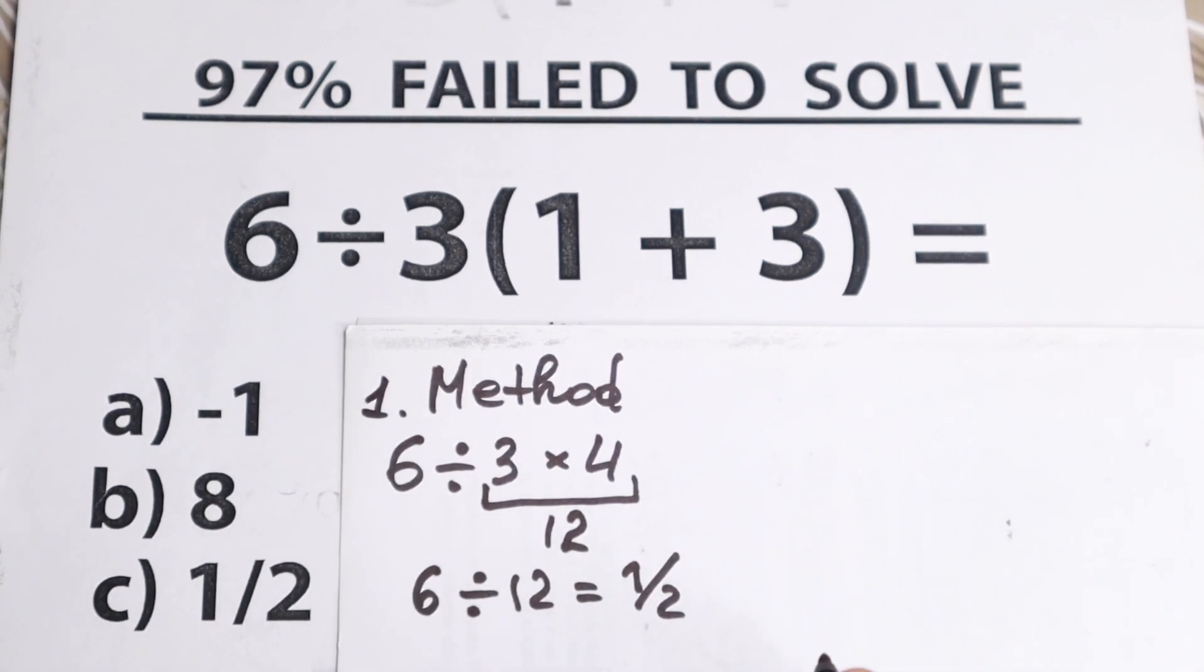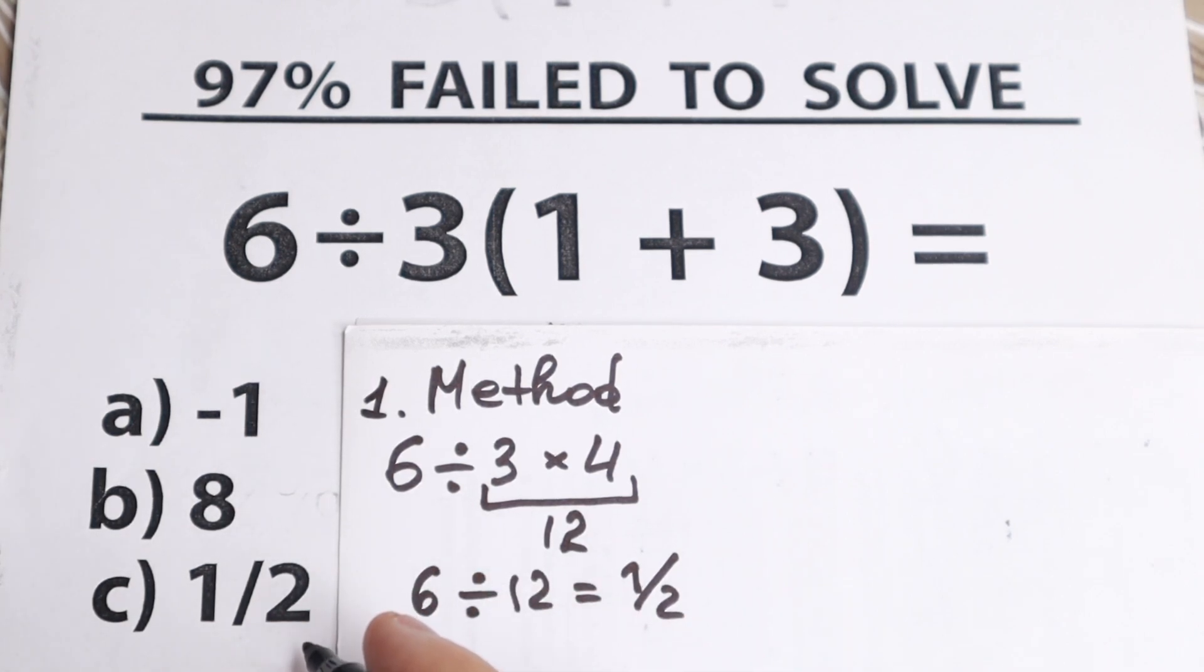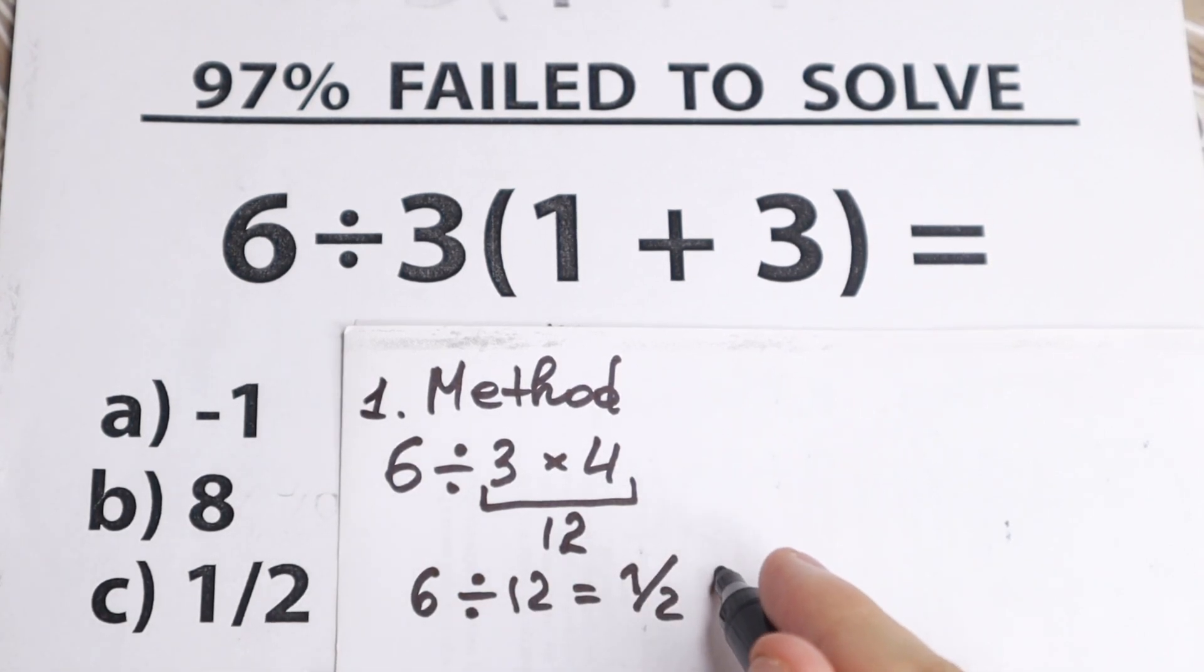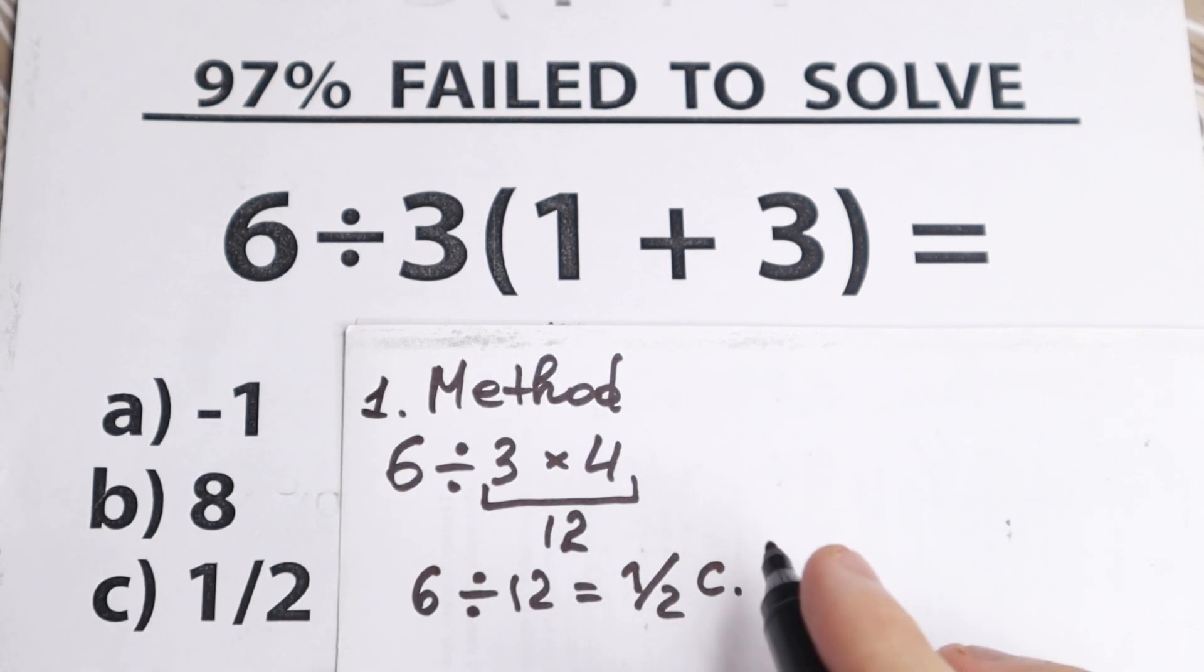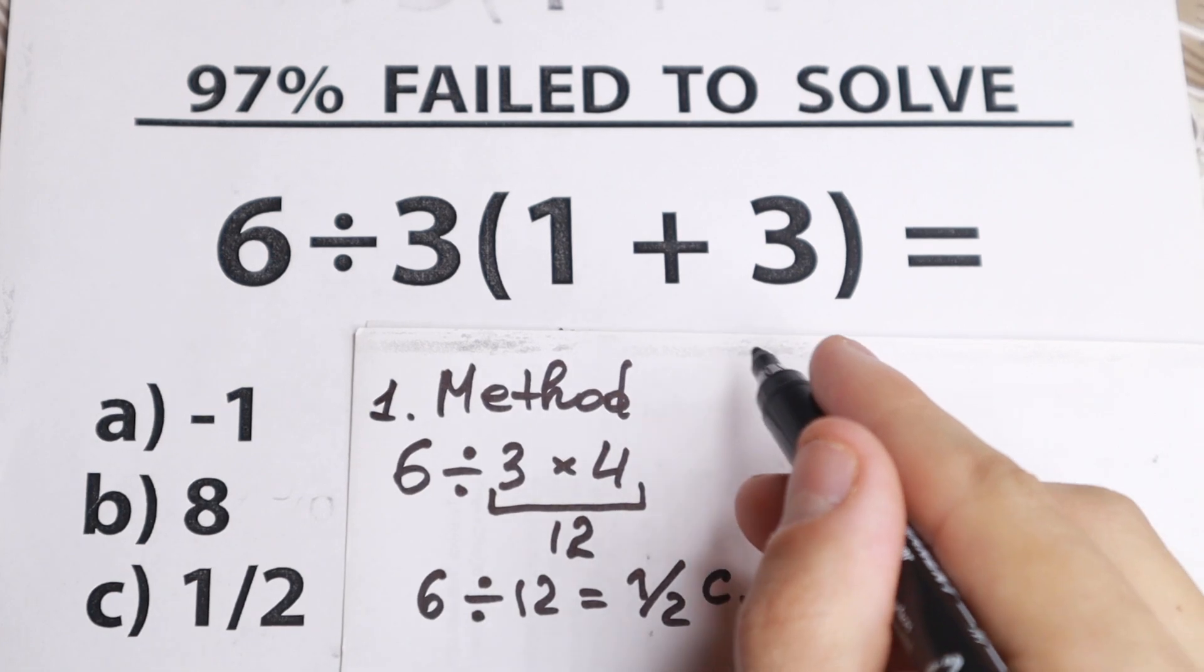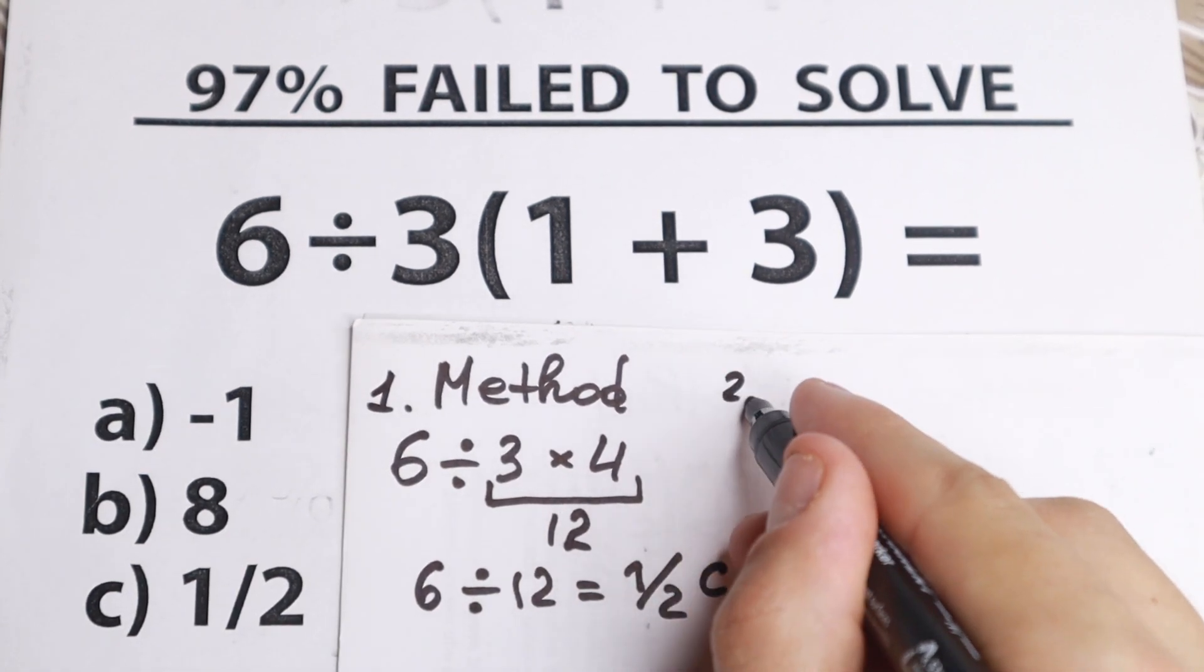As you can see, the answer is 1 half. Because 6 divided by 12 is 1 half. And moreover, we have this option right here. So 1 half, it looks like option C. And it looks like this is the one and only way that we can solve it. But I want to show you the second method. So take a look closely. We have second method. Method 2.